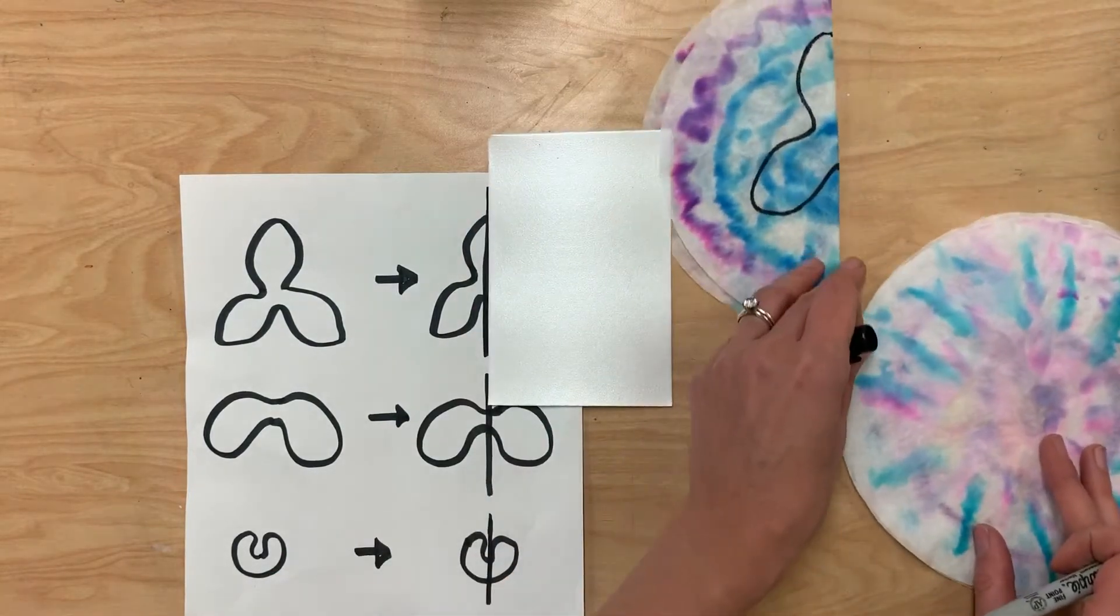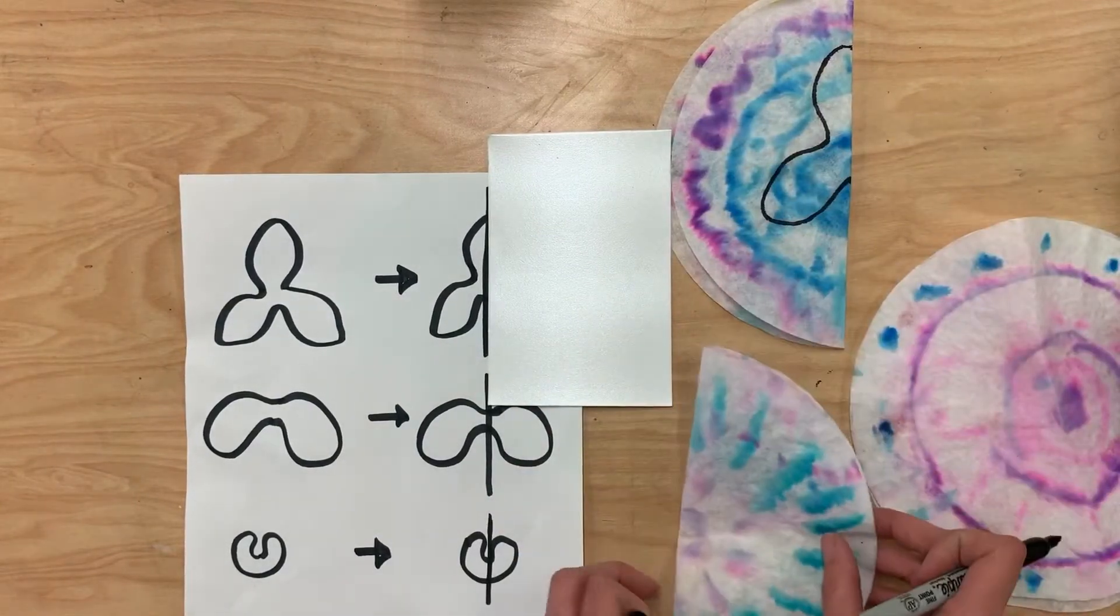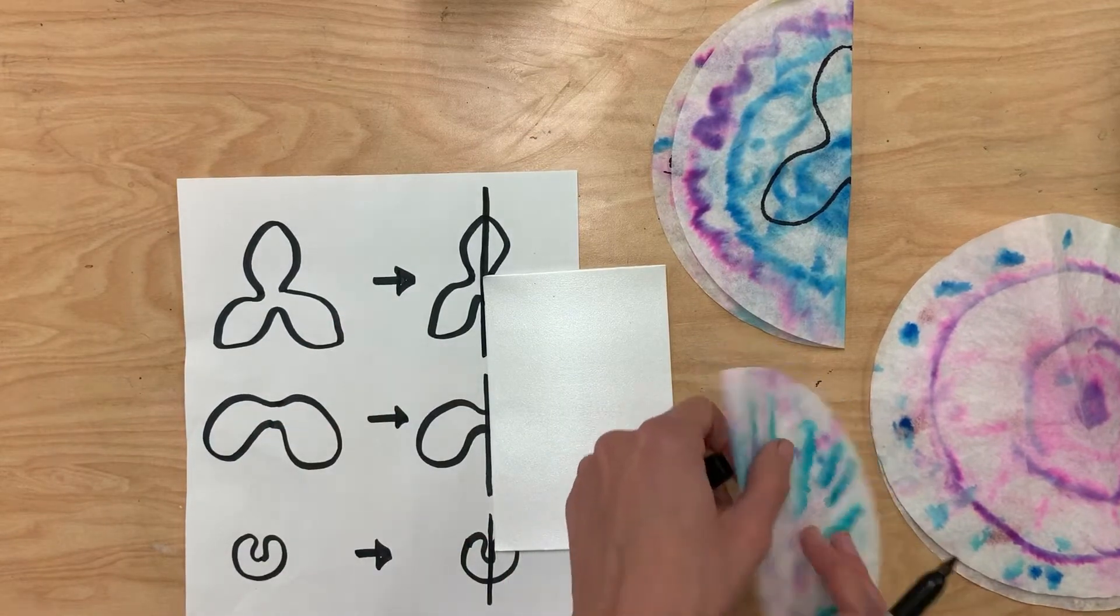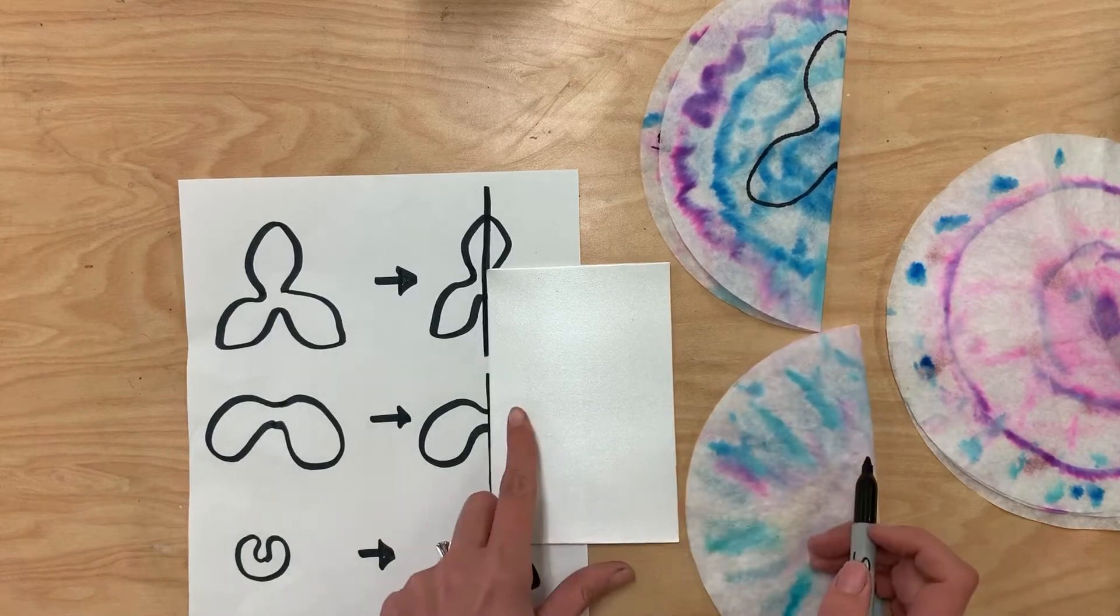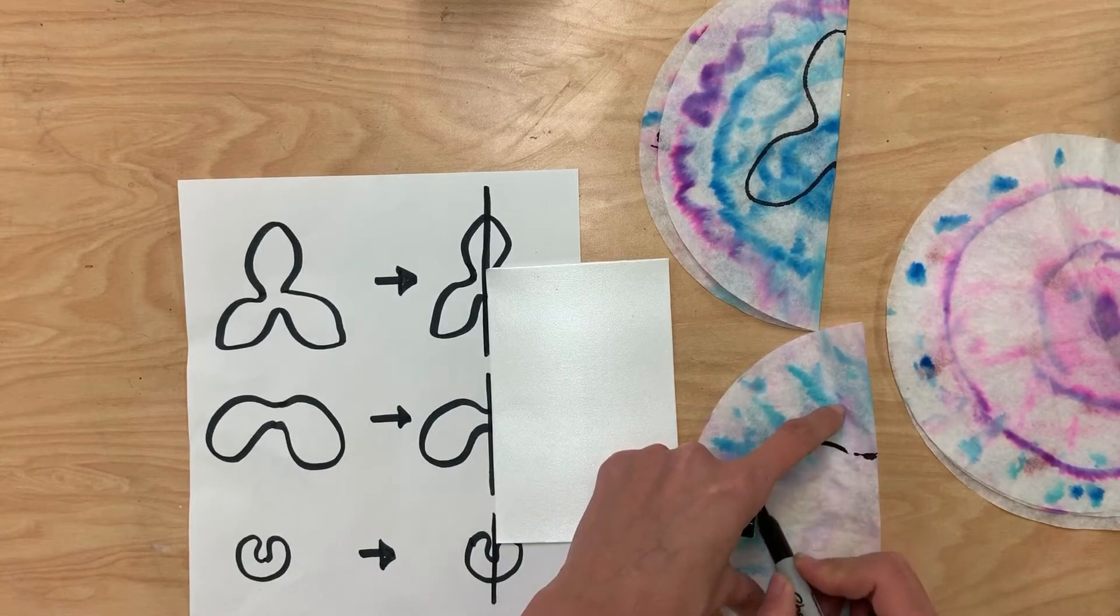I'm going to do the same thing with one of my other colorful pieces here. Fold my coffee filter in half, move this down so that I can do the other piece also. So again, from the folded side, I'm going to be creating this same exact shape. So it comes up like this.